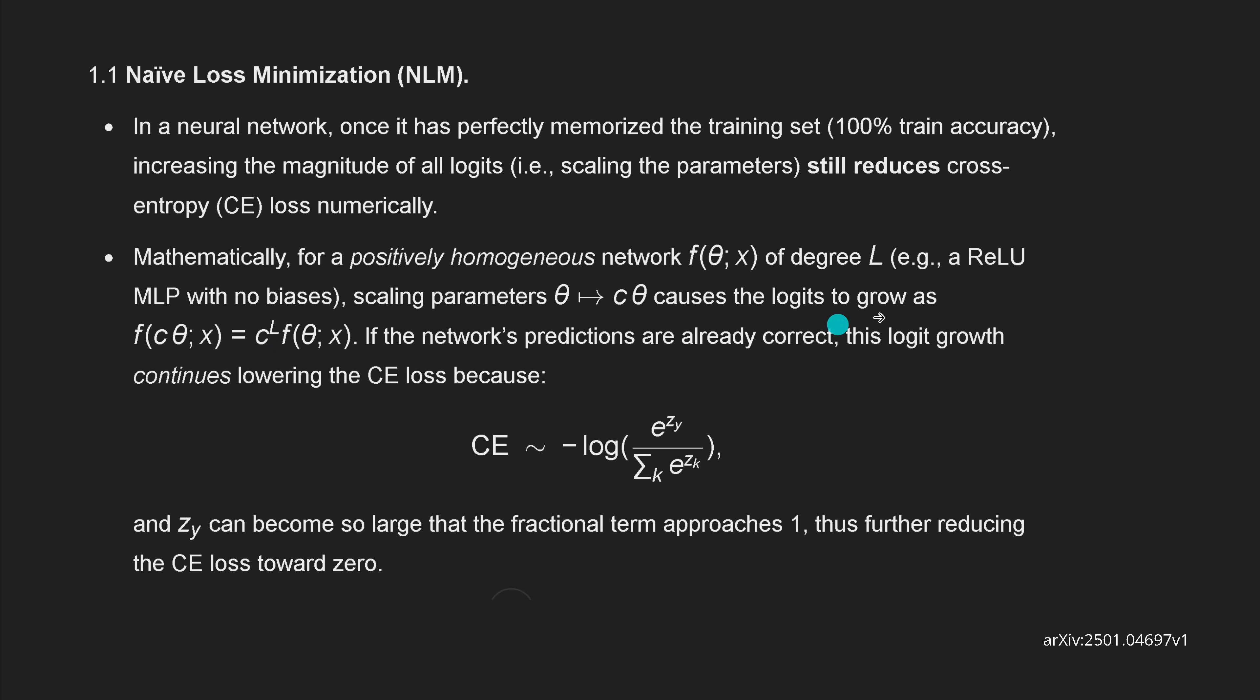So this logit growth that's happening continues now to lower our cross-entropy loss because simply of this formula, and therefore this does induce our cross-entropy loss towards zero, but without any learning. The only thing that is happening is we have a scaling of our weights. This brings nothing in the learning, but causes a numerical instability in our system.